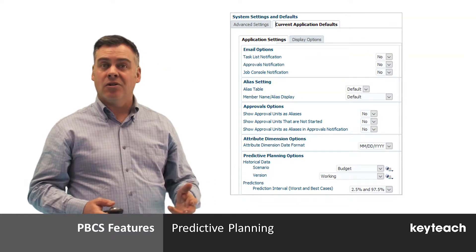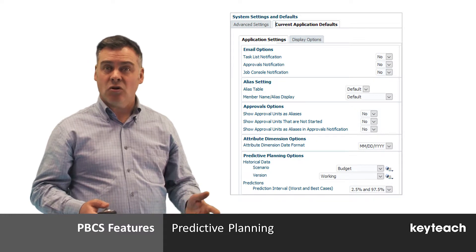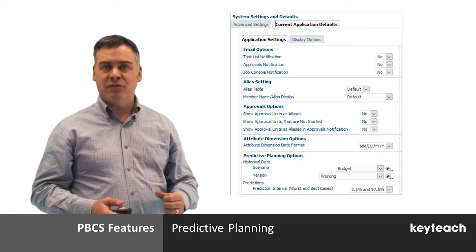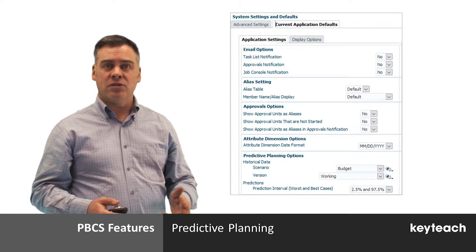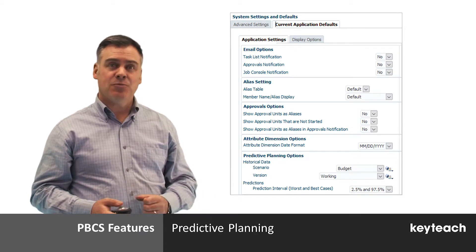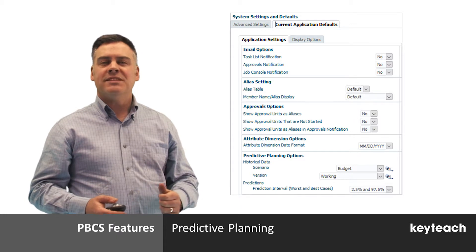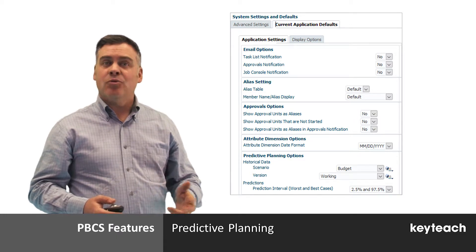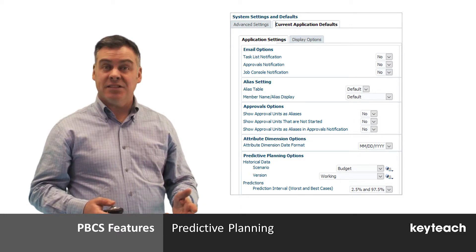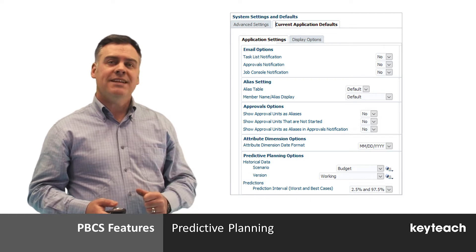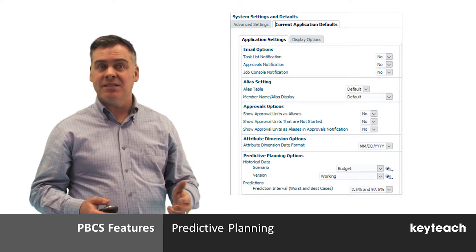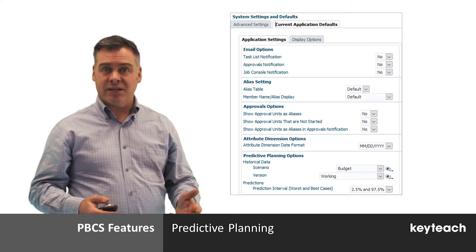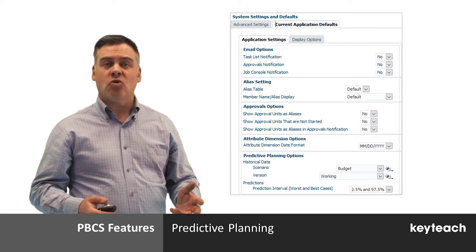Administrators can choose a scenario and version combination to base predictions on in the system settings and default screen. It is also possible to choose prediction intervals for best and worst case predictions. Once these settings have been determined, predictive planning functionality is enabled by default for any dataforms with time dimensions in one axis and other dimensions in the other axis, for example accounts or entities.